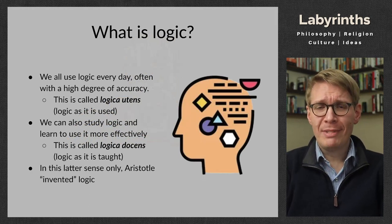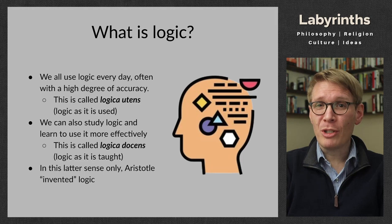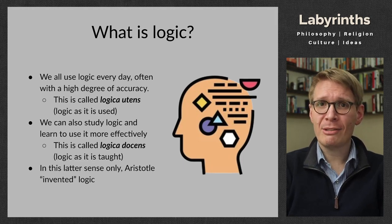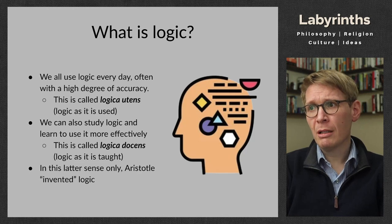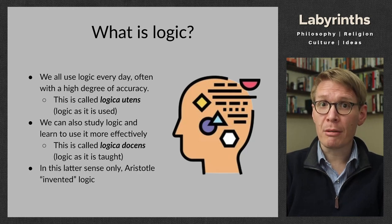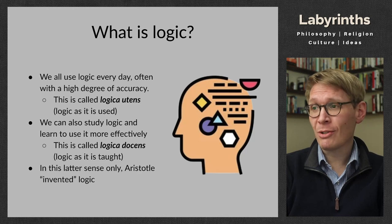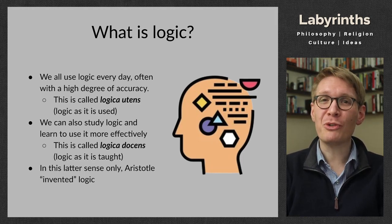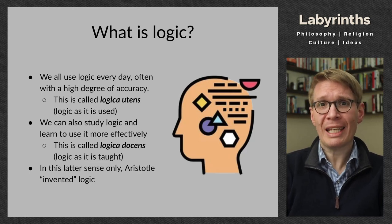We all use logic every day — you use logic when you're two years old, when you're 102 years old. We look at the world, draw conclusions, and act based on those conclusions. This is called logica utens in Latin — logic as it is used. All of us are masters of this. However, it is also possible to study logic, and by understanding why we draw the inferences we do, we can draw better inferences. This is called logica docens. A docent is a person who teaches something — like a museum docent who gives tours. Only in this latter sense did Aristotle invent logic.